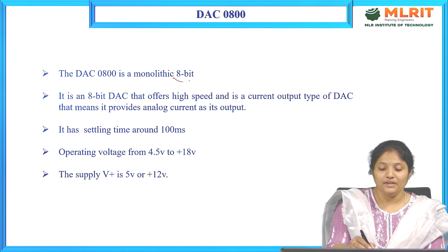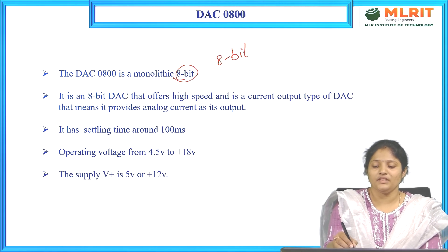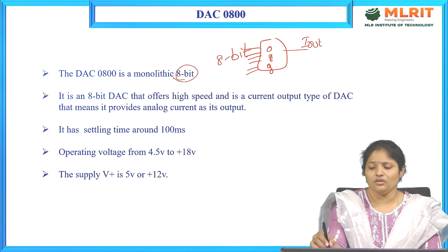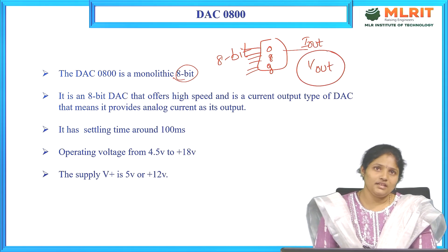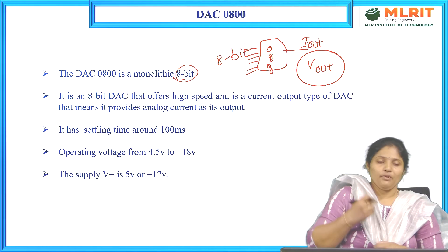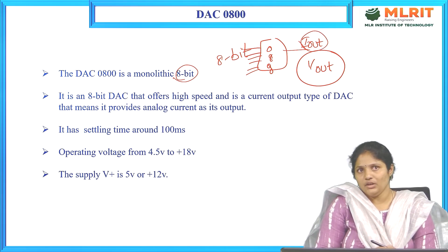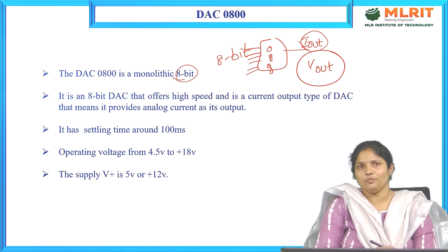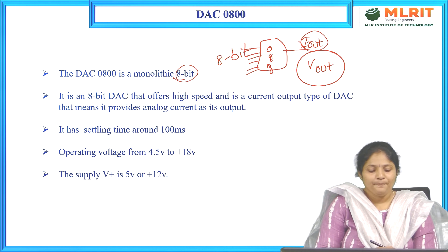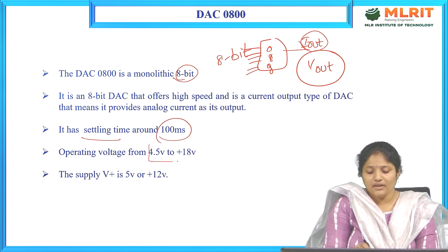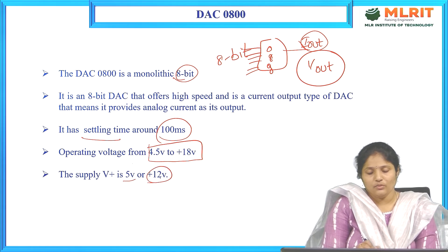The DAC0800 is a monolithic 8-bit Digital to Analog Converter. It takes 8-bit digital inputs and gives one output. It is a high-speed, current output type DAC — the output is I-out (current output). To obtain a voltage output, an op-amp is used at the current output to get V-out. The DAC0800 has a settling time of around 100 nanoseconds and an operating voltage range of ±4.5 to ±18 volts. Typically, a supply of +5 volts or +12 volts is used.